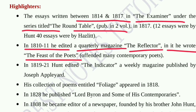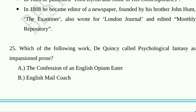Question number twenty-four: Which among the following statements is not correct about Leigh Hunt? Option A, in 1810–11 he edited a quarterly magazine, The Reflector; option B, in 1808 he became editor of a newspaper, The Examiner; option C, he wrote for London Journal and edited a Monthly Repository; option D, he contributed 40 essays in the regular column 'The Round Table.' Option D is the correct answer — he contributed 40 essays is incorrect. The essays in The Round Table, published in The Examiner between 1814 and 1817, included 12 essays by Hunt and 40 essays by Hazlitt.